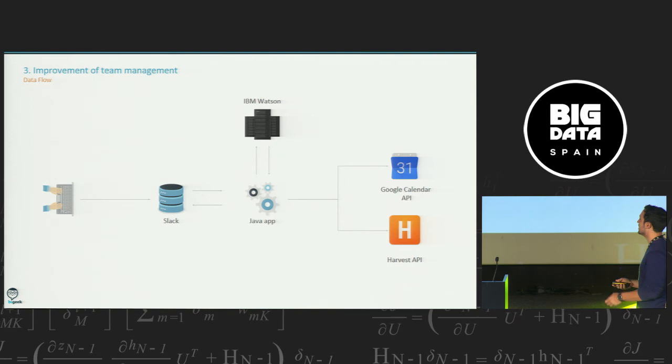The user can write to Slack. The Java application read from the Slack channel. And automatically, we send the message to Watson. Watson calculate and make every calculation and give us the intents and the entities. With this intents, we can know what the user wants. What is the goal of this message? For example, in this case that I explained before, to schedule a meeting, the intent could be a scheduled meeting. And we know that we have to send to Google Calendar. So we send this to Google Calendar. Google Calendar give us the response. The Java application write to the Slack channel. And the user can be notified.